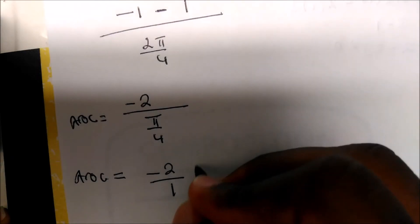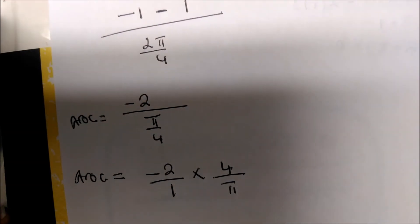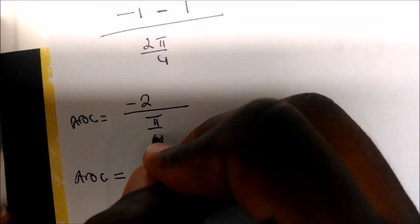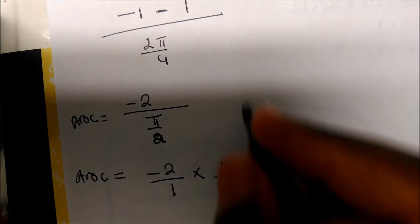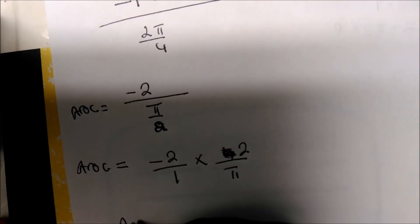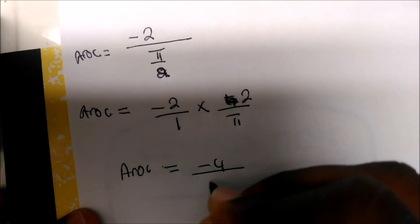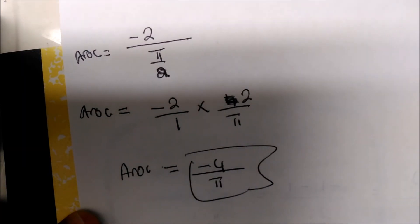To simplify negative 2 divided by π/2, we multiply and flip: negative 2 times 2/π, giving us negative 4 over π. So the average rate of change is negative 4 over π.